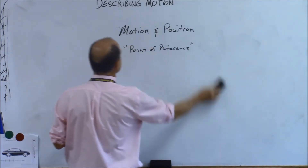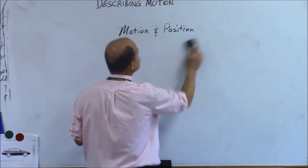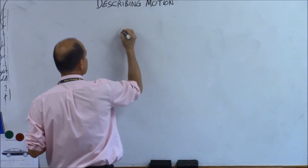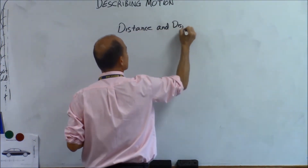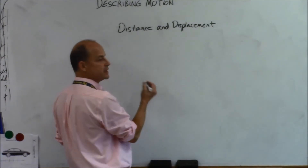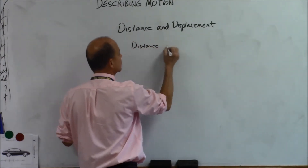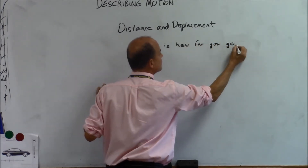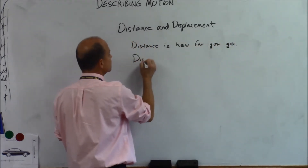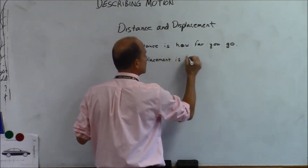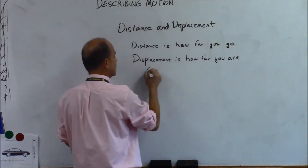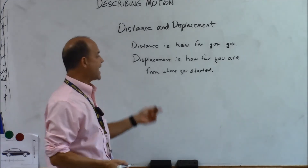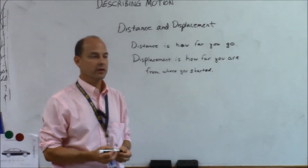Next bullet in your notes: let's talk about distance and displacement. Distance is how far you've gone — how far you travel in total. Displacement is how far you are from where you started.